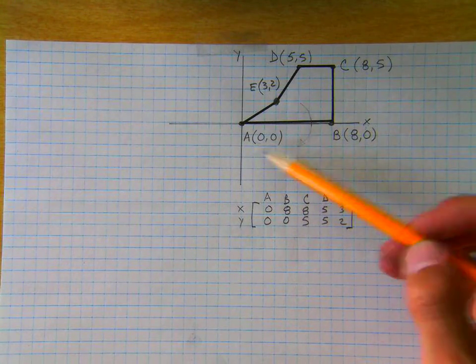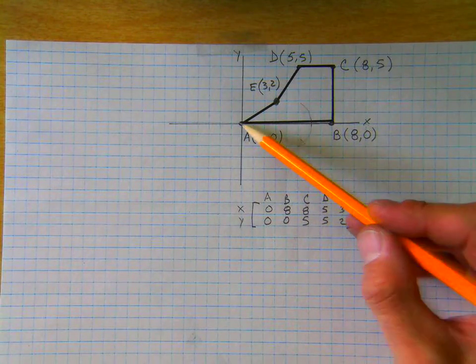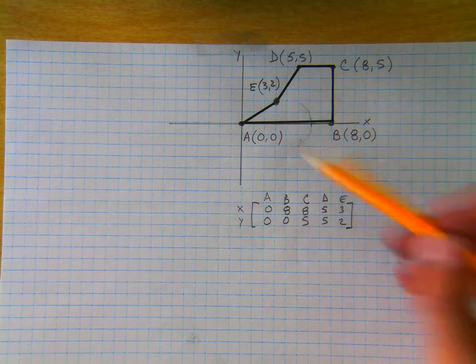Let's say we have this figure that is represented by the points A, B, C, D, and E. And here are the coordinates.